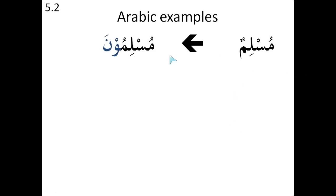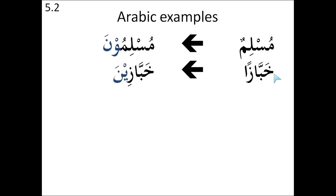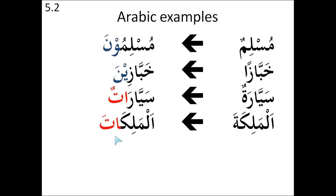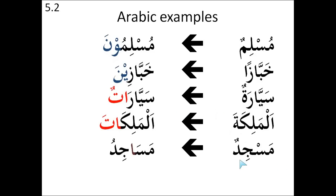You have the word 'Muslim', which becomes 'Muslimuna'. 'Khabbaz' becomes 'khabbazina'. 'Sayyarah' becomes 'sayyaratun'. 'Al-malika' becomes 'al-malikatun'. These four examples — the top two — have roughly the same way of forming the plural. They add an ending, which is either waw-nun or ya-nun. The third and fourth examples just add an alif and ta.